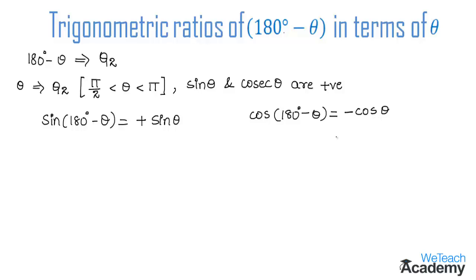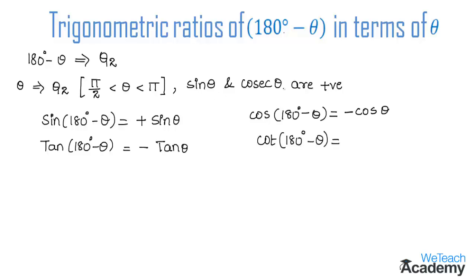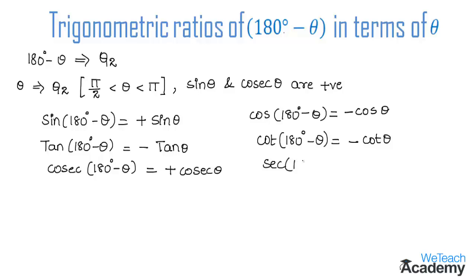Continuing with the remaining ratios: tan of 180 degrees minus theta equals minus tan theta. For cot of 180 degrees minus theta, since cot is negative in the second quadrant, we get minus cot theta. For cosecant of 180 degrees minus theta, since cosecant is positive in the second quadrant, we get positive cosecant theta. And secant of 180 degrees minus theta equals minus secant theta.